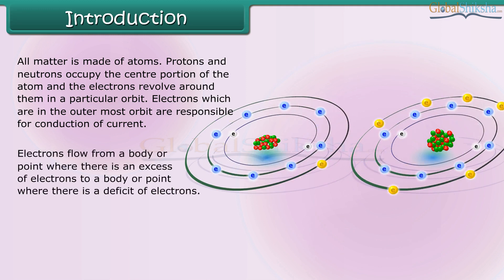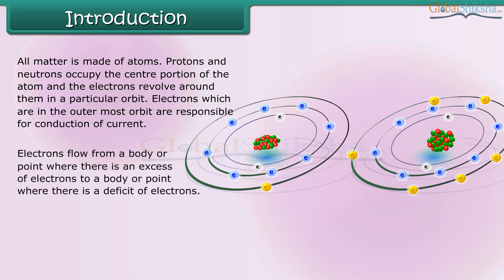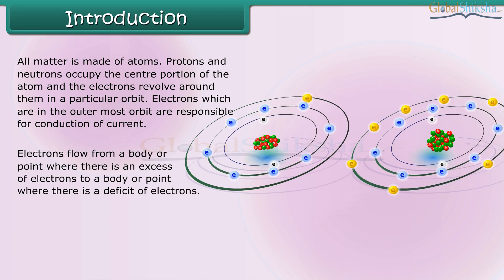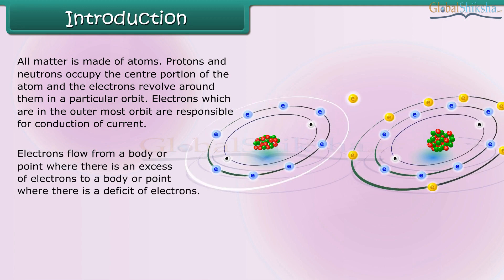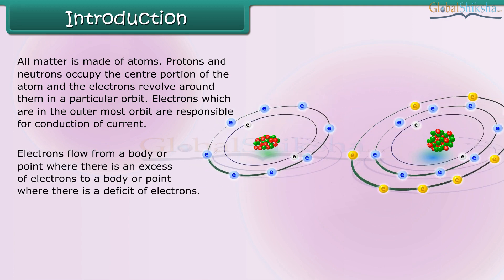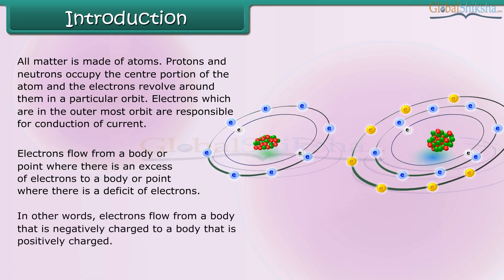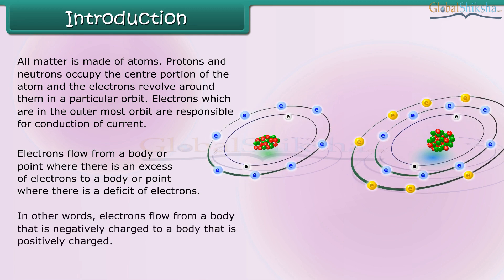Electrons flow from a body or point where there is an excess of electrons to a body or point where there is a deficit of electrons. In other words, electrons flow from a body that is negatively charged to a body that is positively charged.